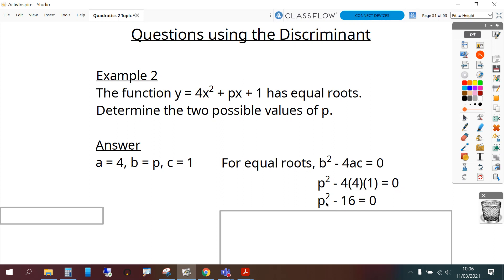Now we recognize that this is a difference of two squares. It's a squared letter and a squared number. So that gives us p minus 4, p plus 4. Either bracket can equal 0. So that gives us two solutions. p is equal to 4 or p is equal to negative 4.